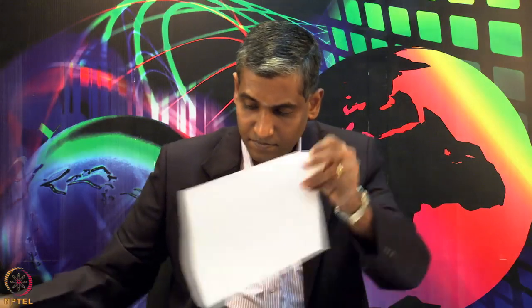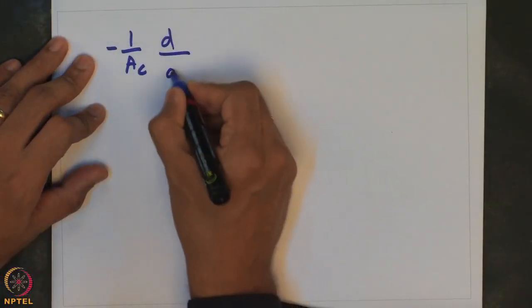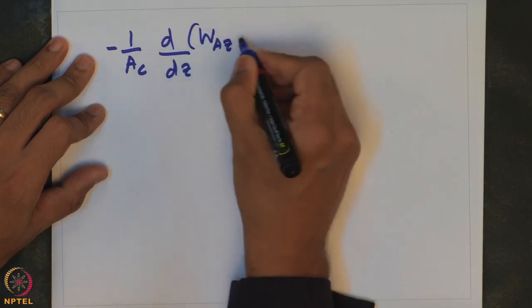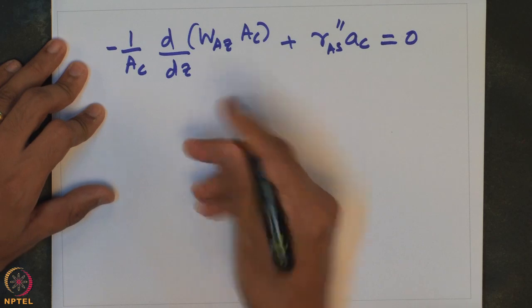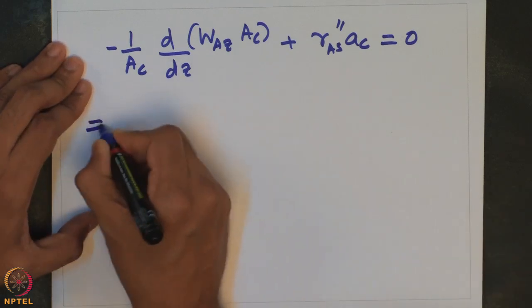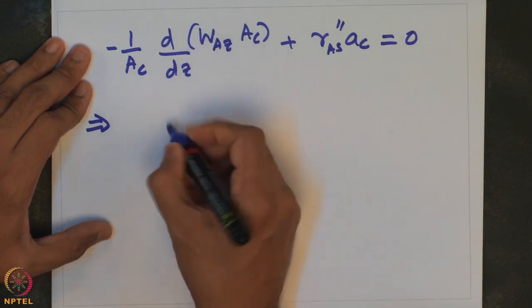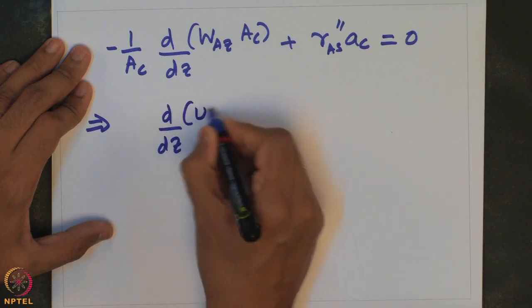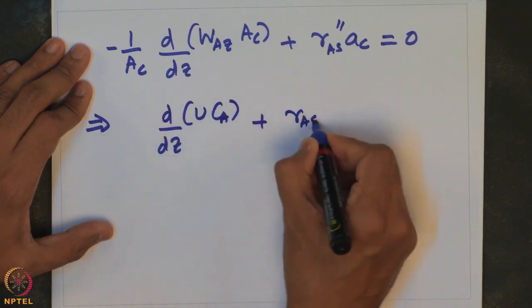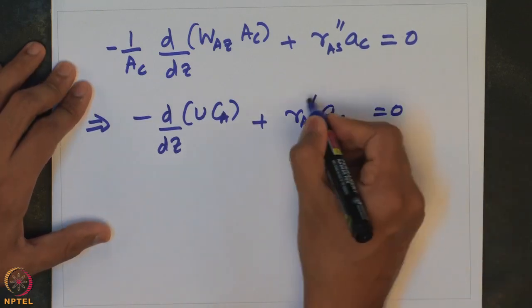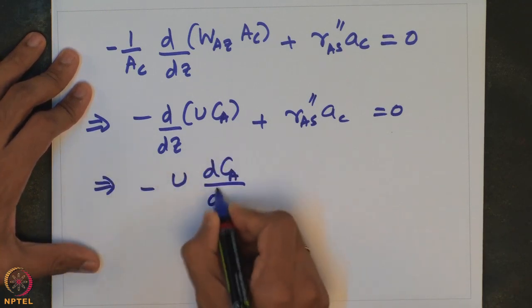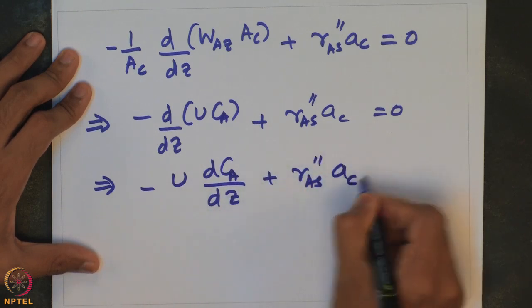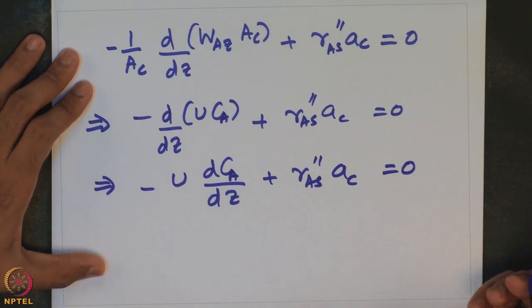Substituting into the mole balance, we find: minus (1/Ac) × d(Wa_z × Ac)/dz plus Ra_s'' × Ac equals zero. This reduces to: d(u × Ca)/dz + Ra_s'' × Ac equals zero, and further to: minus u × dCa/dz + Ra_s'' × Ac equals zero. This is the mole balance. If we know the surface reaction rate as a function of concentration, we can solve this for the packed bed reactor design.